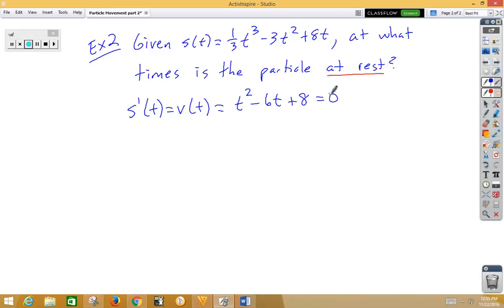Oh look, another factoring problem. So let's factor that bad boy as (t - 2) and (t - 4) equal to zero. That means either t - 2 is zero or t - 4 is zero. So at times 2 and 4, the particle is at rest.